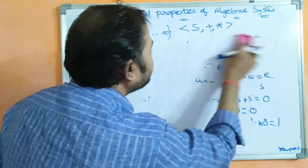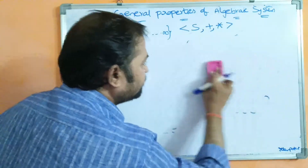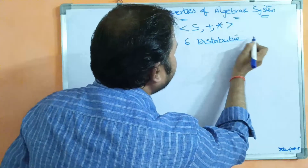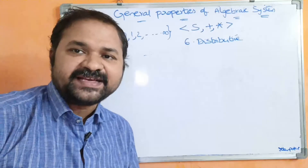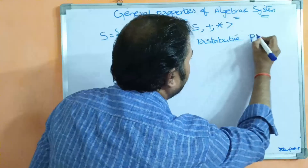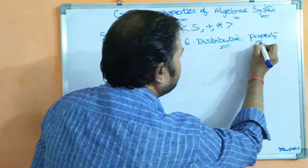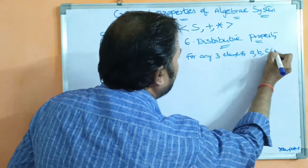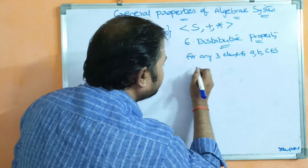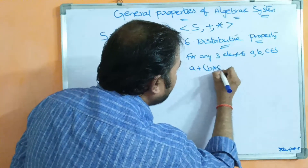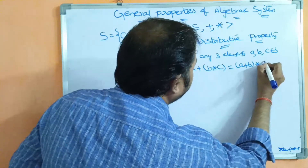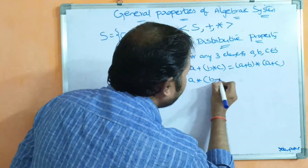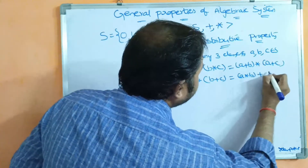Five properties are done. The sixth property is distributive property. For any three elements a, b, c belonging to S, distributive property uses two different operations. The first formula is: a plus (b star c) equals (a plus b) star (a plus c). The second formula is: a star (b plus c) equals (a star b) plus (a star c).